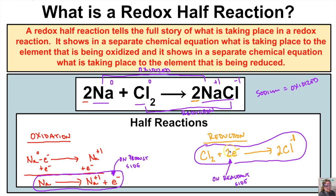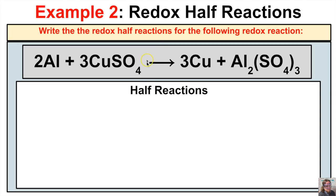Together, these two half reactions produce the entire redox reaction. There are two separate reactions taking place — one element is being oxidized and one is being reduced — and from that we can write the two half reactions. Let's take a look at another example: write the redox half reactions for the following reaction, which appears to be a single replacement reaction.